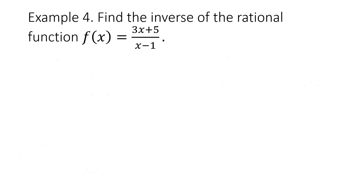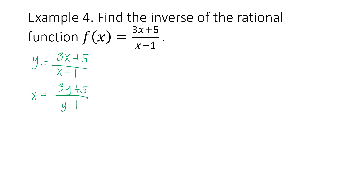Example 4. Find the inverse of the rational function f(x) equals 3x plus 5 over x minus 1. To solve for the inverse, change f(x) to y. So y equals 3x plus 5 over x minus 1. Then interchange y and x: x equals 3y plus 5 over y minus 1. To solve for y, we eliminate the denominator by multiplying both sides by y minus 1 using MPE. That gives us (y minus 1) times x equals 3y plus 5. Using the distributive property, xy minus x equals 3y plus 5.